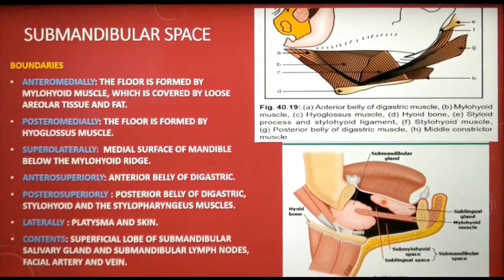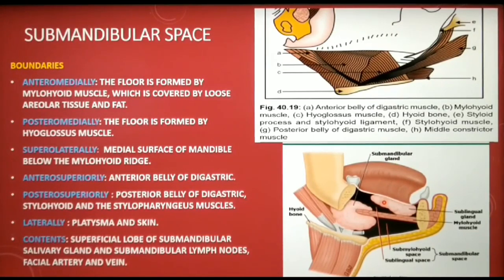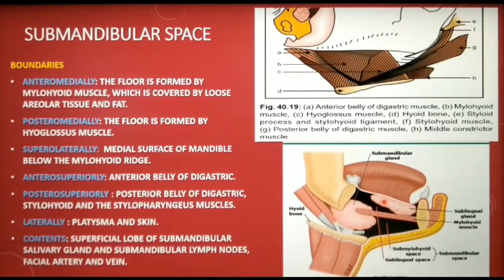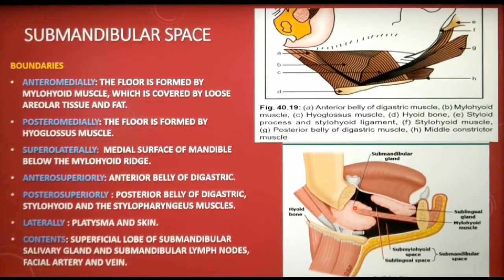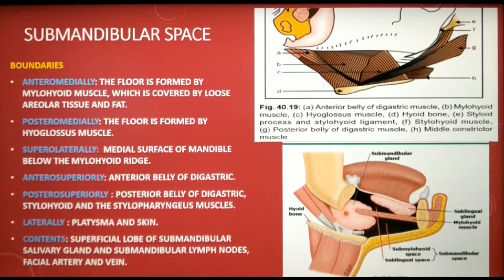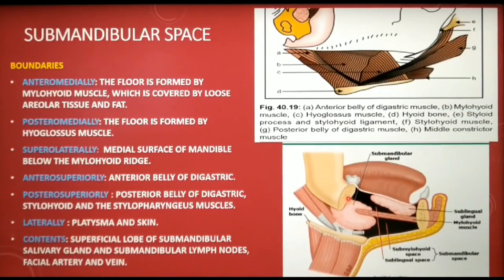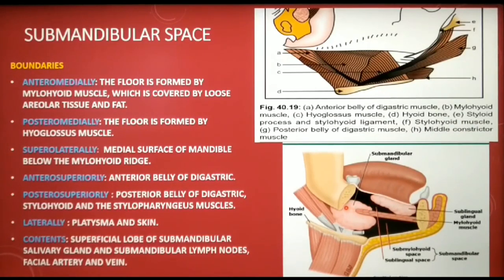This space is involved most frequently by infections originating from mandibular molars. The pus perforates the lingual cortical plate of the mandible inferior to the attachment of the mylohyoid muscle, and the infection passes directly to the submandibular space. The teeth responsible for sublingual space infections are the mandibular anterior teeth and premolars, whose apices are confined superior to the mylohyoid muscle. Whereas the apices of mandibular molars extend beyond the mylohyoid muscle, extending infection to the submandibular space.